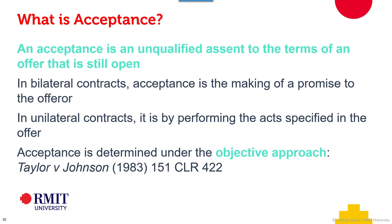In a bilateral contract, acceptance is the making of a promise to the offeror. Even if it's only for a couple of seconds, in a bilateral contract, at the point that the agreement is made, both parties — bilateral or multilateral, all parties — will have obligations. Even something as simple as buying a cup of coffee: at the time the agreement is made, I promise to pay money in exchange for a promise of a cup of coffee.